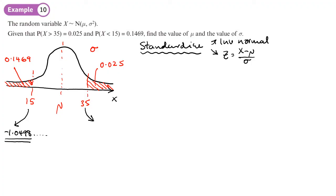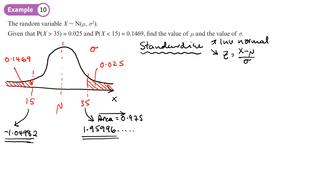Let's start with the left-hand side and standardize x = 15. Using inverse normal with area 0.1469 gives a standardized value of −1.49982. For the right-hand side, remember the area to type in must be from the left, so use 0.975 — or equivalently 1 − 0.025. That gives a standardized value of 1.95996. I'll use five decimal places for accuracy. Those are my two standardized values.